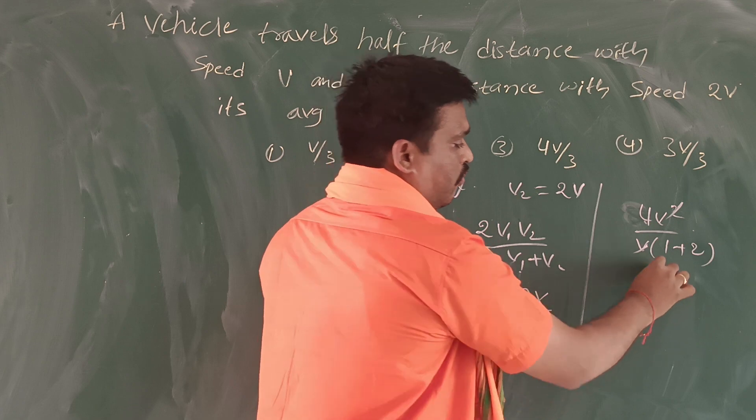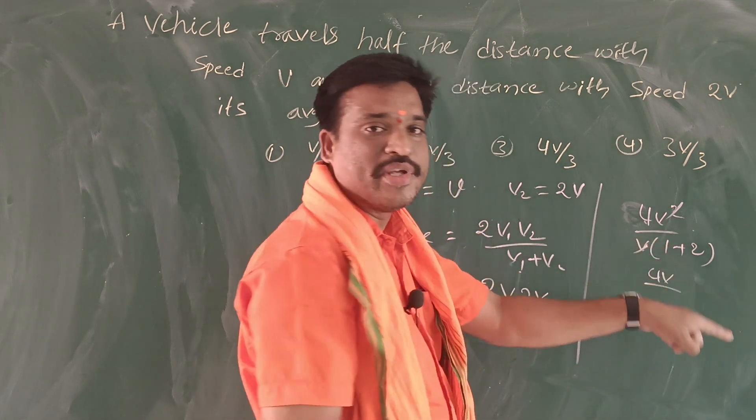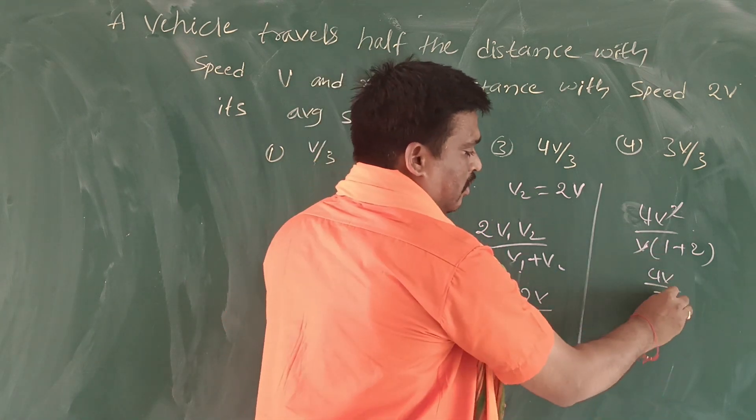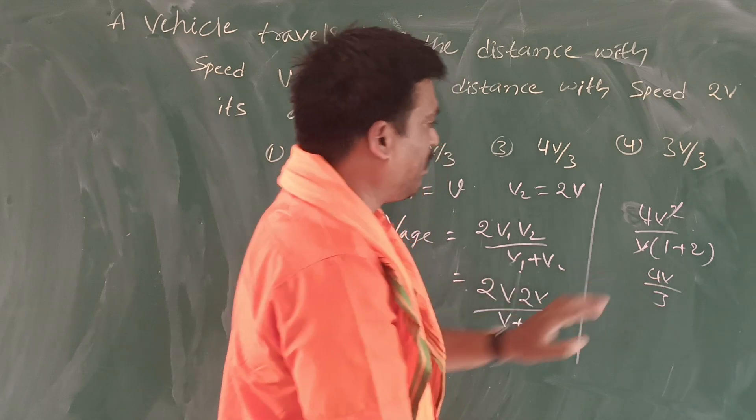v cancels out. 4v divided by 1 plus 2, which is 3. So 4v by 3.